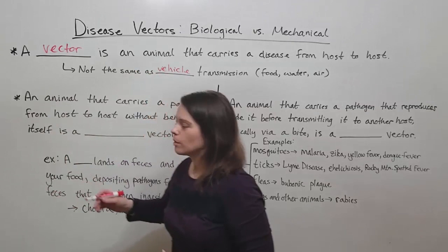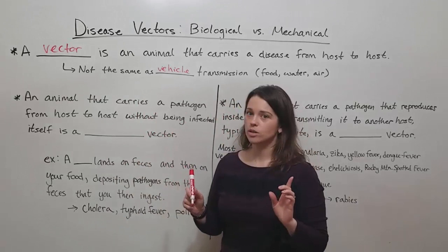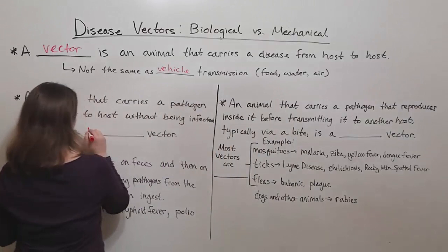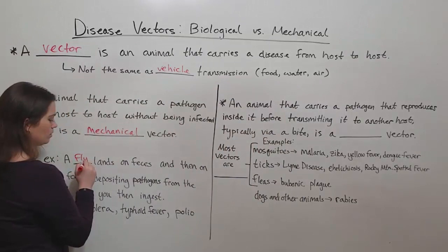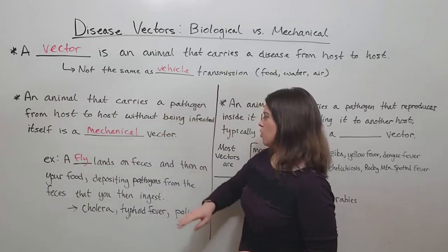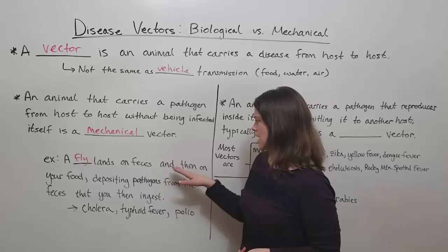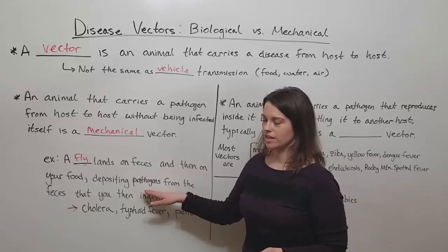An animal that carries a pathogen from host to host without being infected itself is called a mechanical vector. A great example of this is the housefly. The housefly is thought to be able to transmit as many as 60 or more diseases. The way it does this is because it can land on something like feces — animal feces, human feces — and then it can land on your food, depositing pathogens from the feces onto your food that you then ingest.